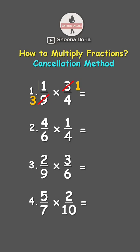Now multiply across. 1 times 1 is 1, while 3 times 4 is 12. Answer: 1 over 12.